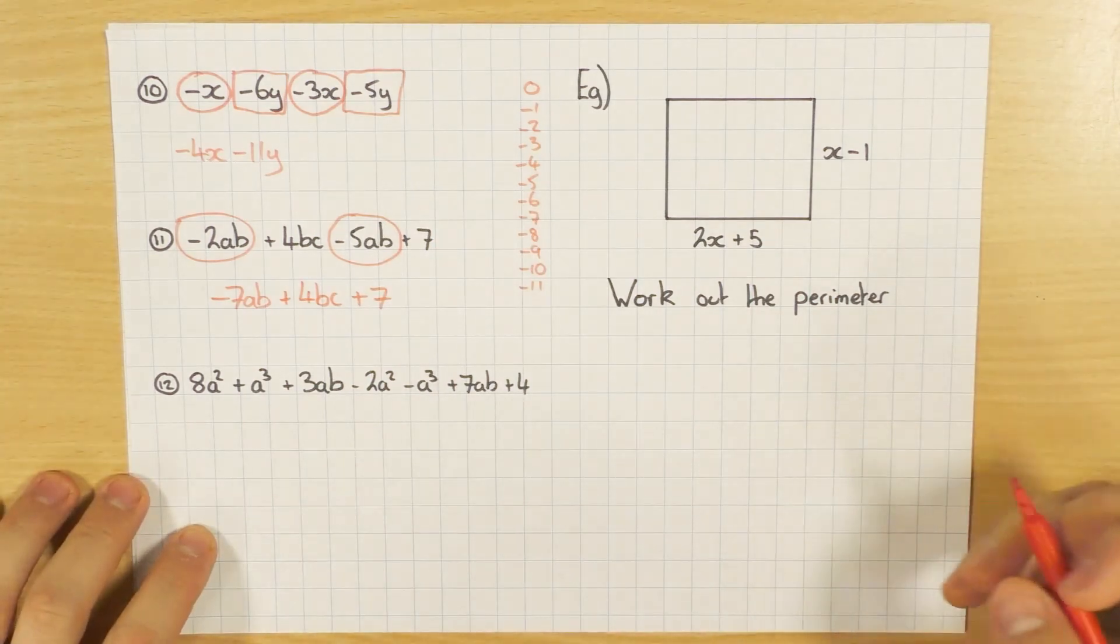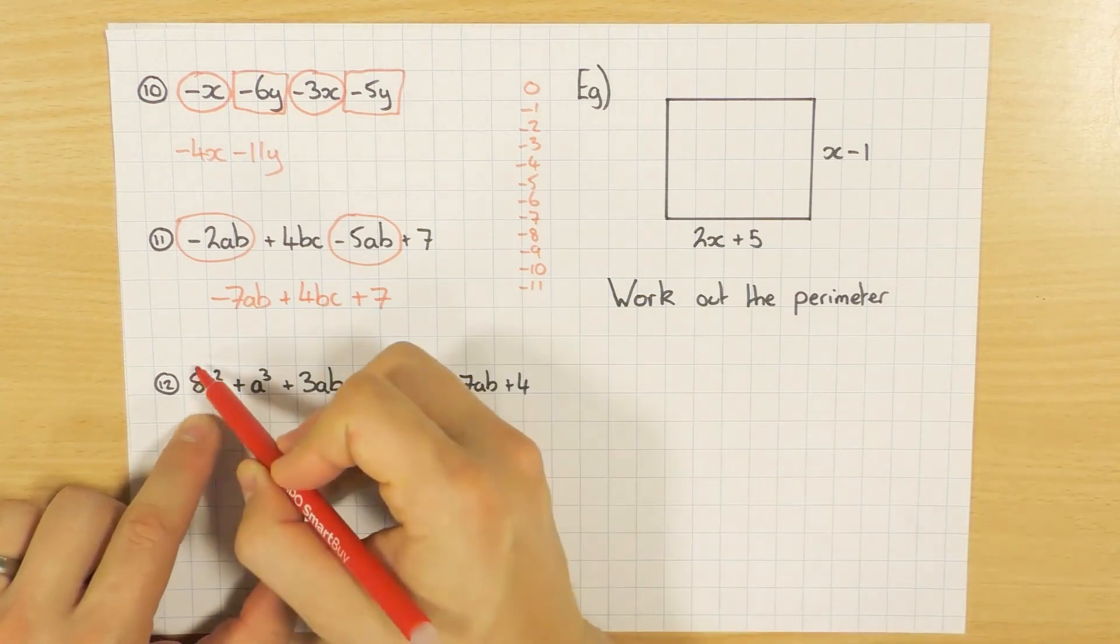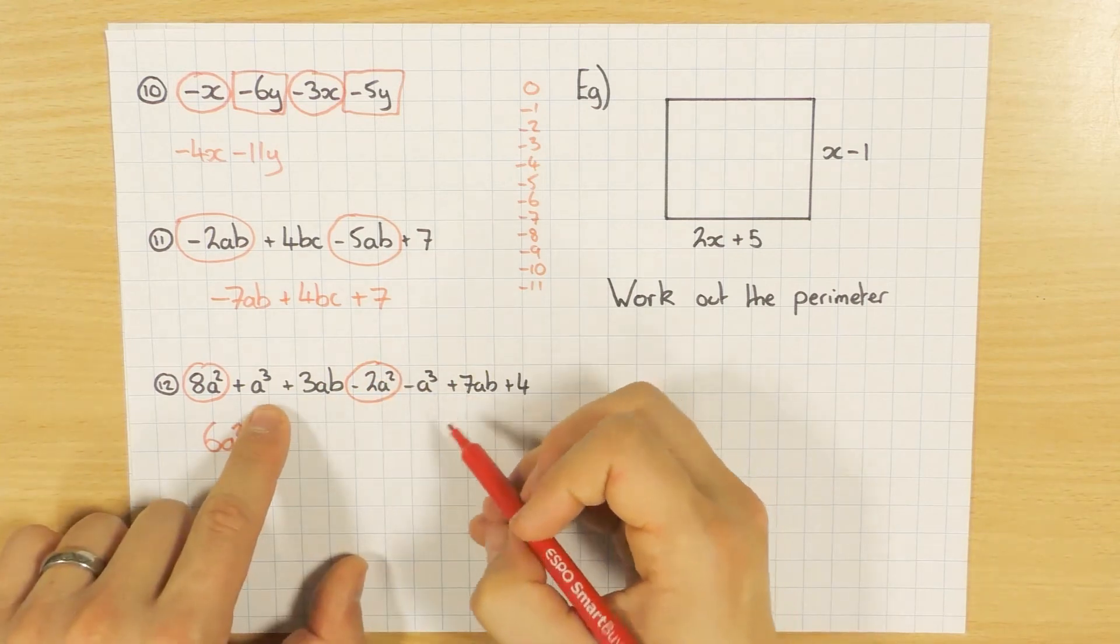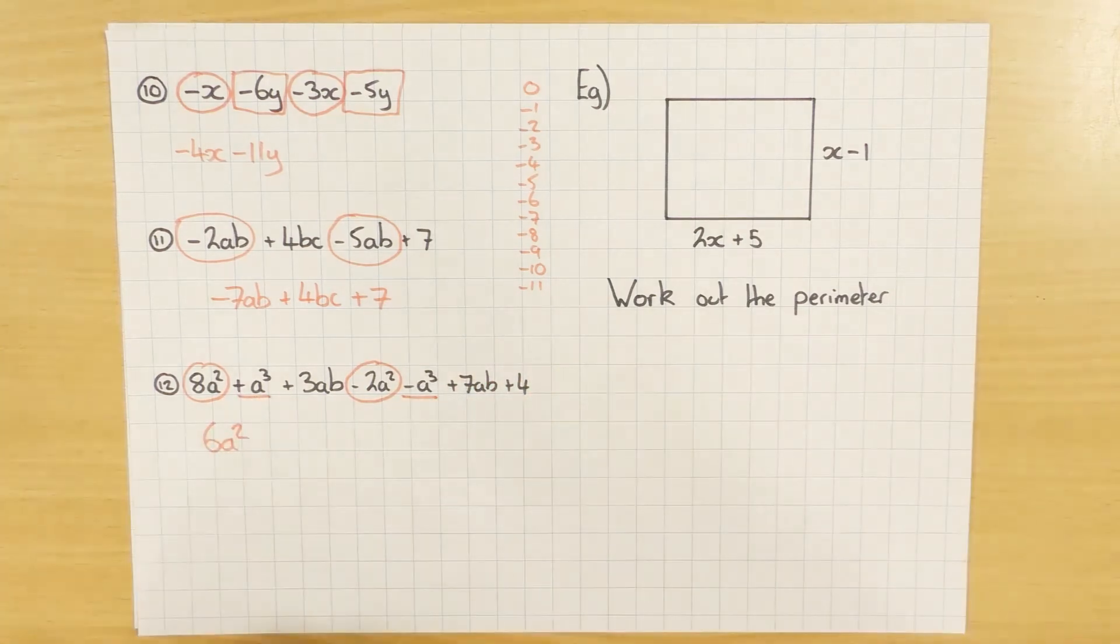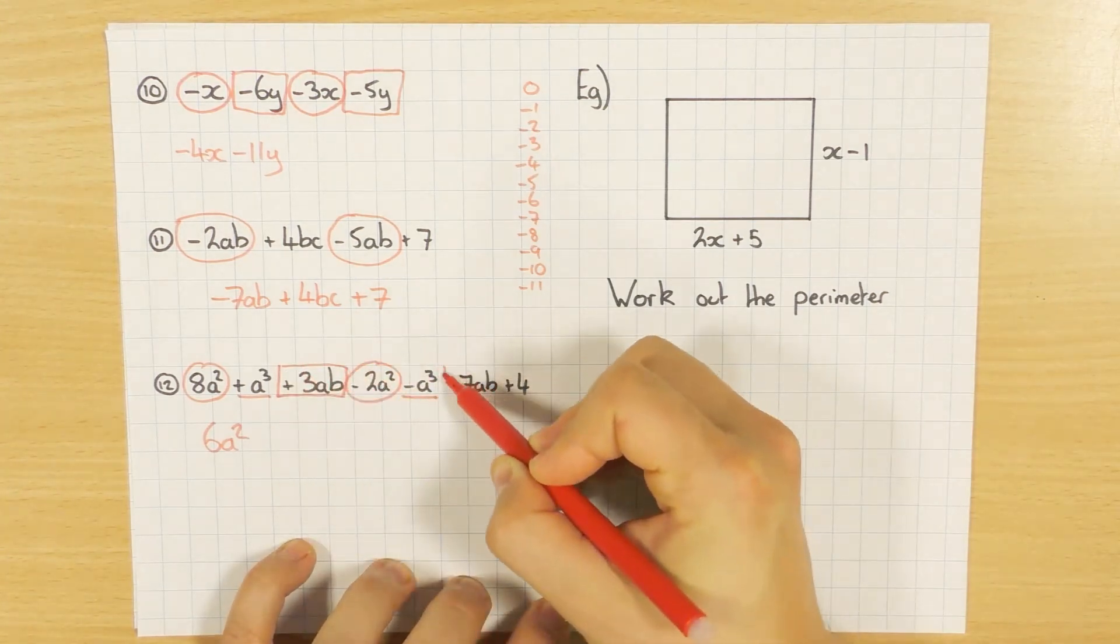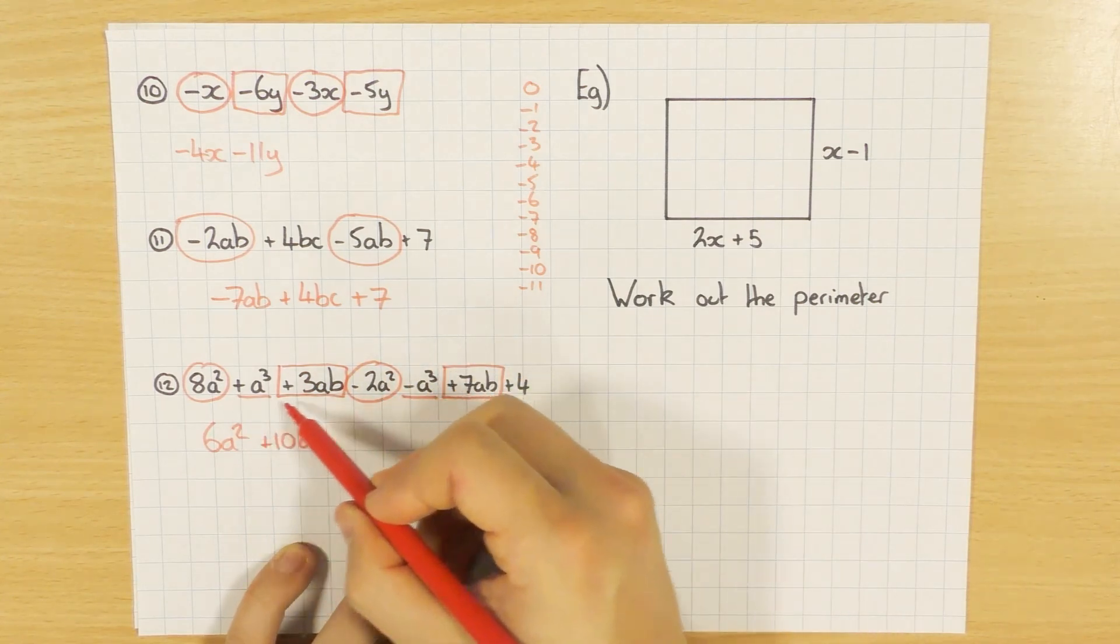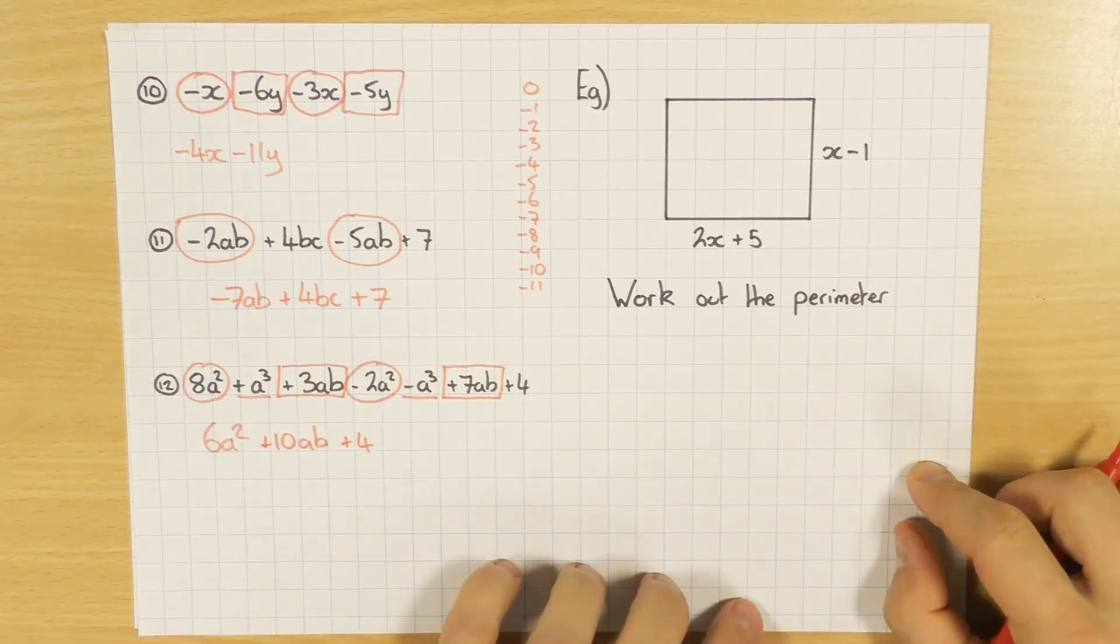And last one, I just put a bit of a beast in here just for a bit of fun. So I've got my A squared. Any other A squared? Yep, there's one there. So I've got my 8A squared minus 2A squared, which will give me 6A squared. Got an A cubed and a minus A cubed there. So positive A cubed minus A cubed is nothing. They just cancel each other out. Got some AB. Let's have a look. I've got one there and I've got another one there. So 3AB plus 7AB is 10AB. And just a 4 on the end. So I can't do nothing with the 4. There's no other numbers. So I just leave that as plus 4. And that's collecting like terms.